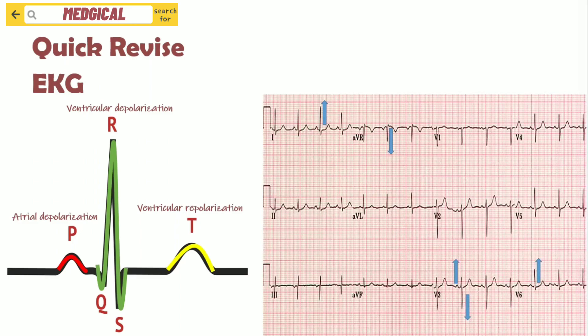In a normal EKG, we will see 12 leads: Lead 1, 2, 3, AVR, AVL, AVF, V1, V2, V3, V4, V5, and V6. The electrical activity is always away from AVR, so the R wave is always downward in AVR. It is always toward V6, V5, Lead 2, 3, and AVF, so they have a positive R wave.